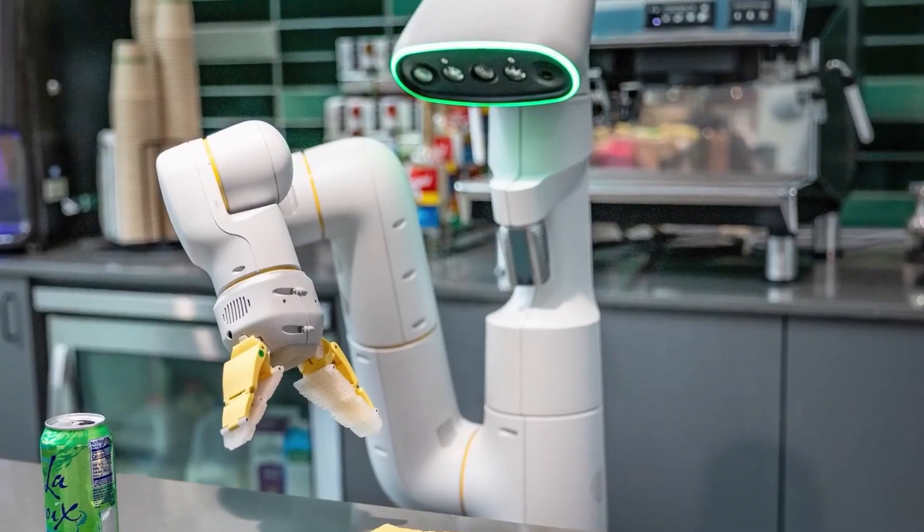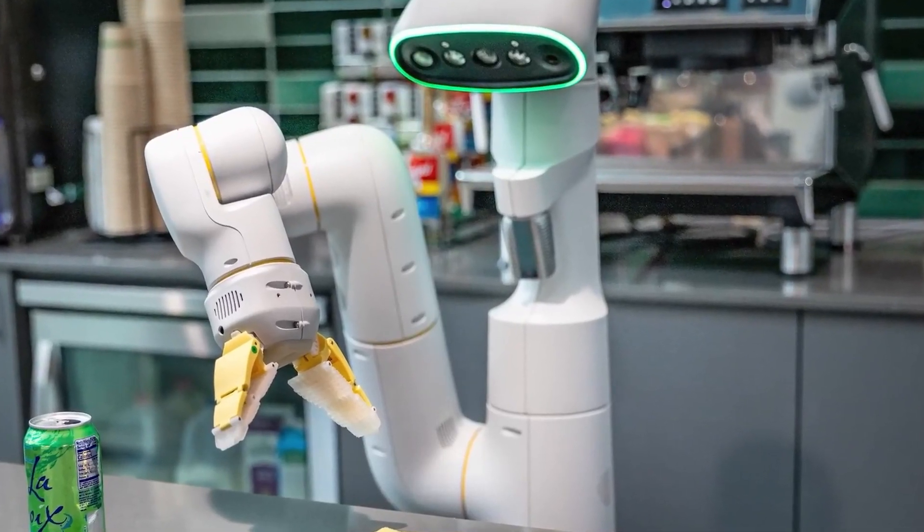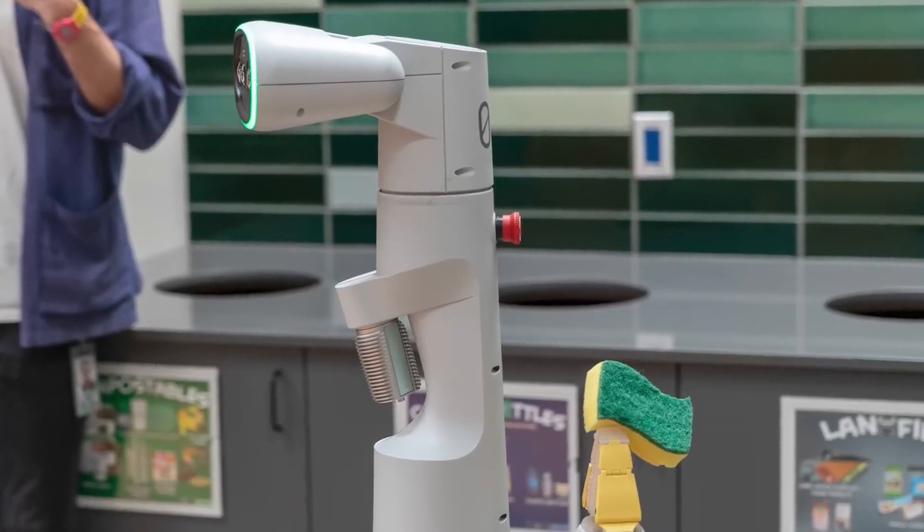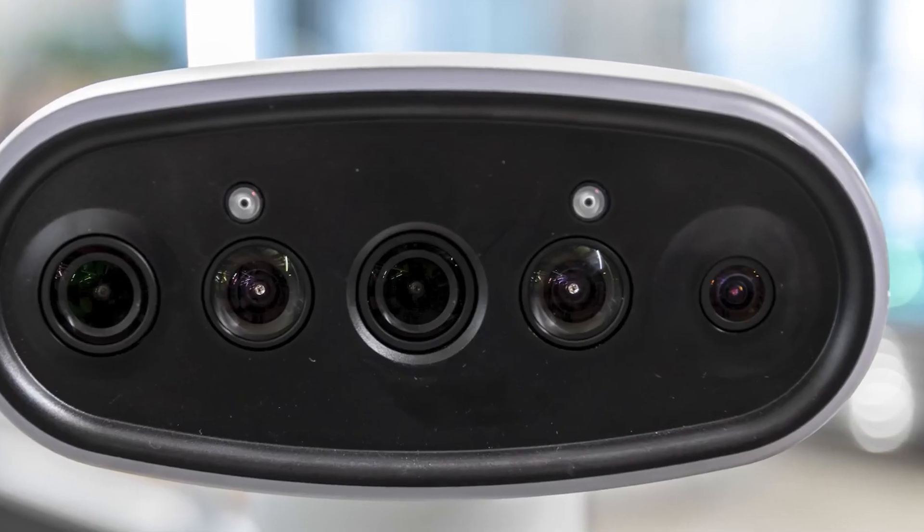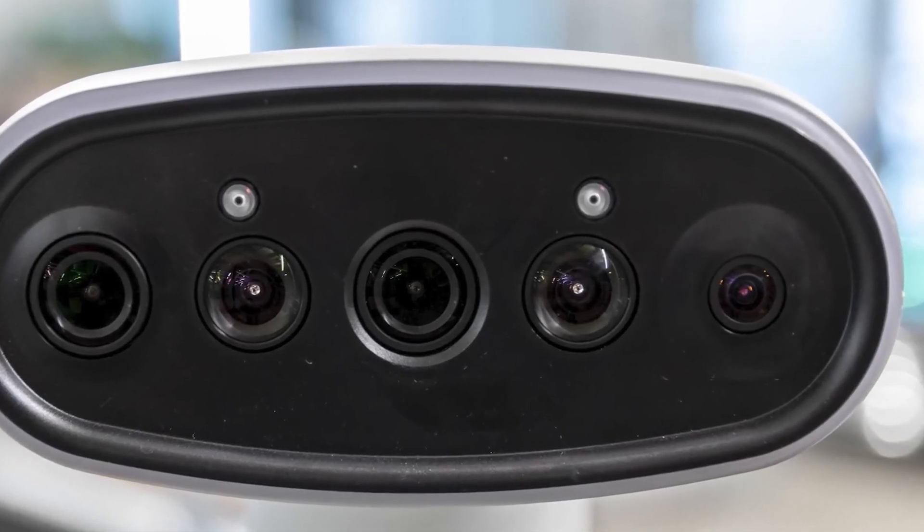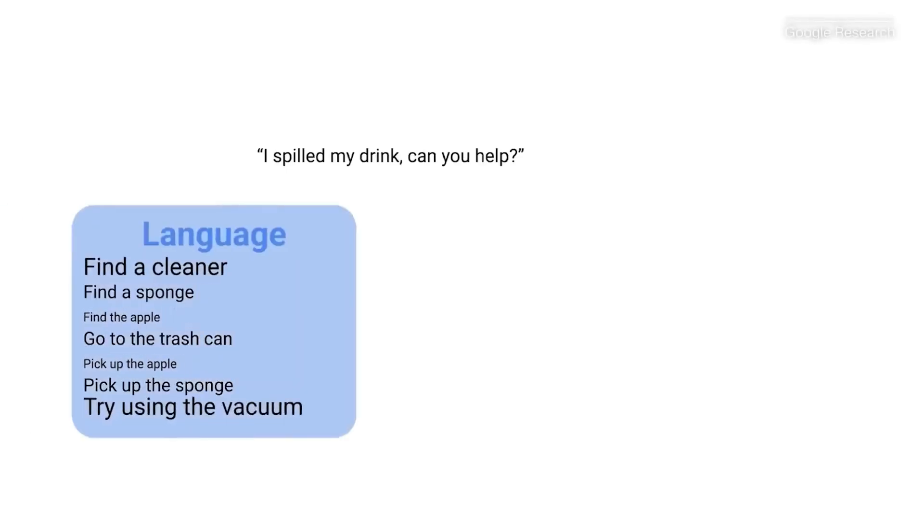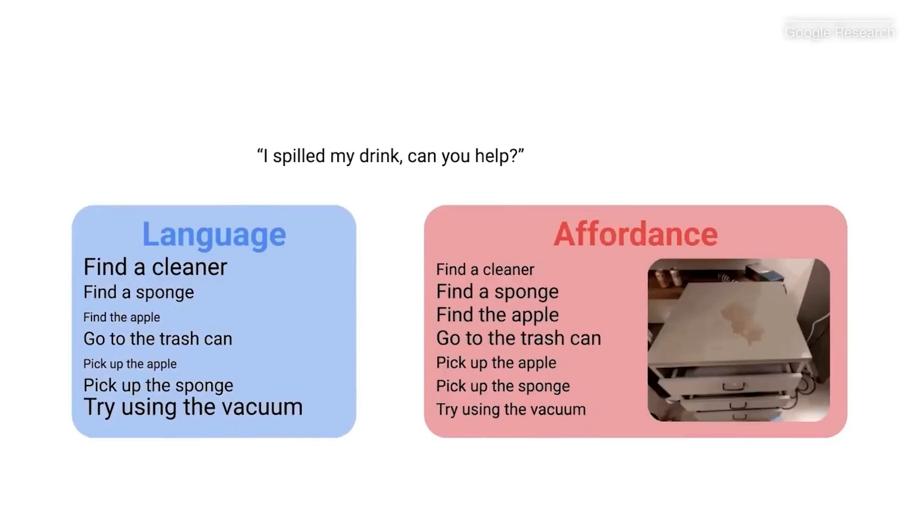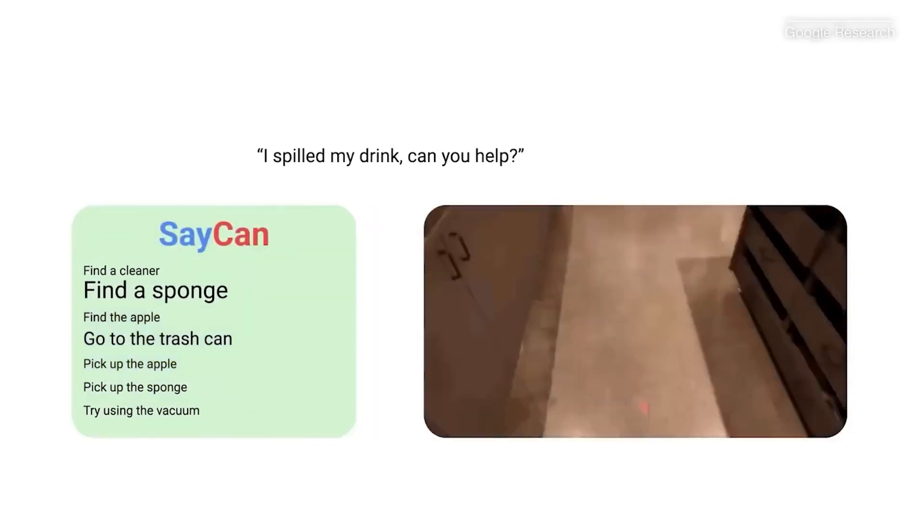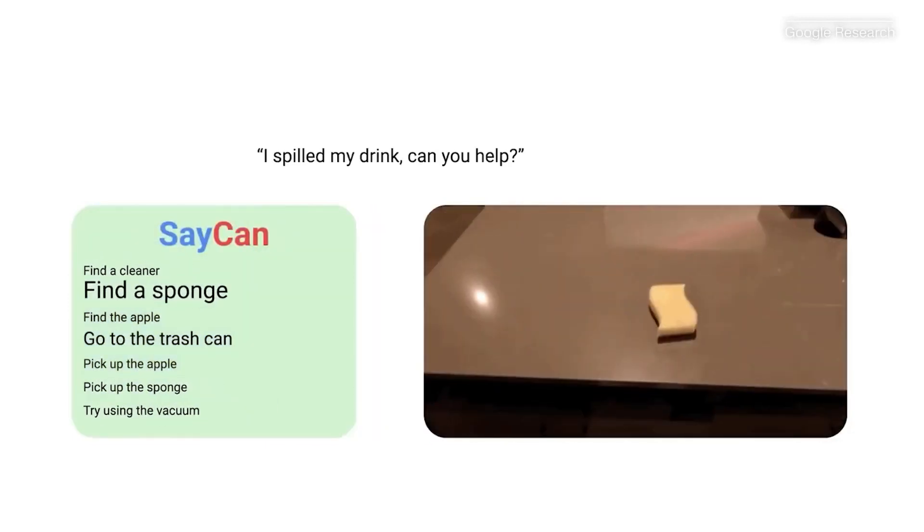It's like taking what a computer is really good at, such as recognizing pictures and understanding text, and using that knowledge to help a robot figure out what to do in different situations. This new robot is different because it blends learning from the web with learning from real-world tasks, which helps it do things that other robots might not be able to do.